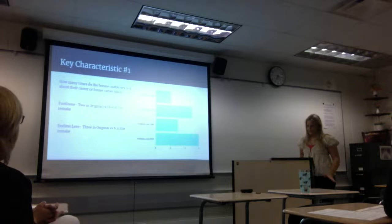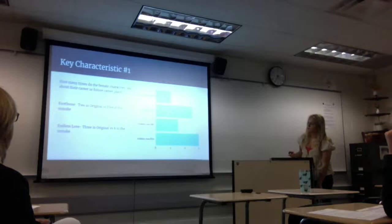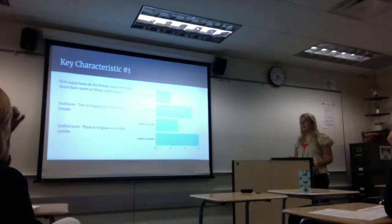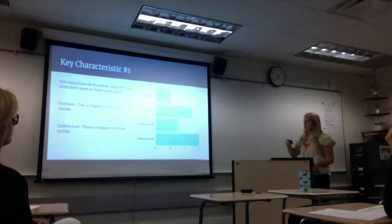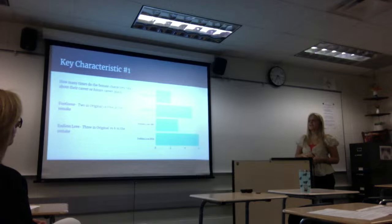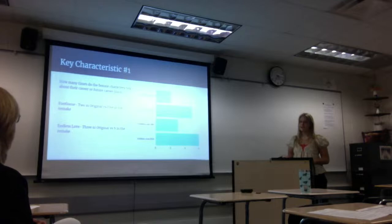A key characteristic from my tracking sheet was how many times the female characters talk about their future career plans. In Footloose, it was two in the original and five in the remake. In Endless Love, it was three in the original and six in the remake, as shown in the bar graph on the right. This was one of the few characteristics that had a significant change.